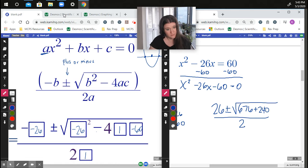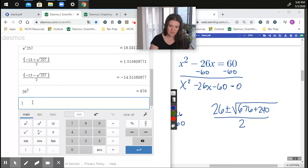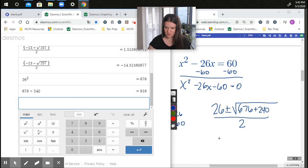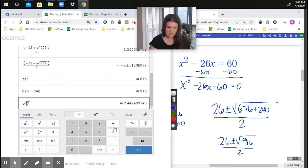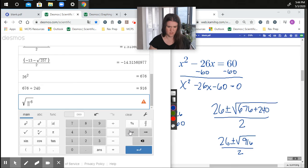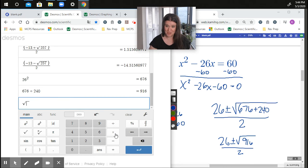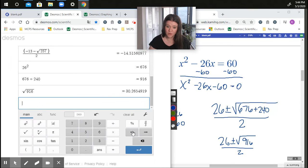Alright, now I can look at decimals because it's a wonderful thing. Alright, so again, 676 plus 240 is 916. So this is 26 plus or minus the root of 916 over two. And that's a fine answer. I am pretty sure the square root of 916 doesn't exist because what am I doing? Let's just start that again. This is a fine answer.